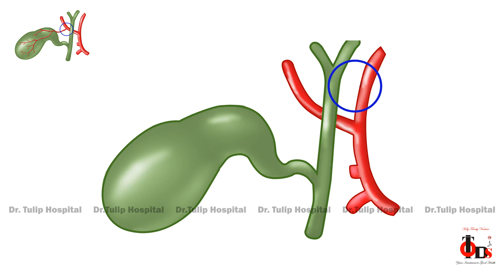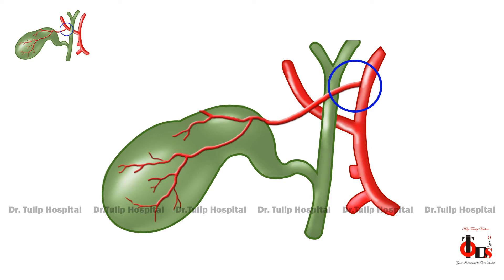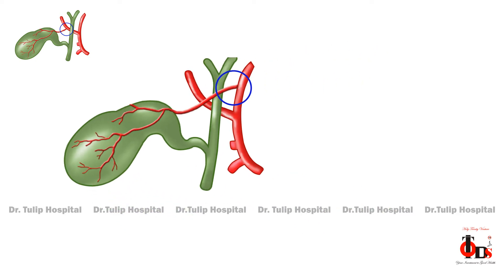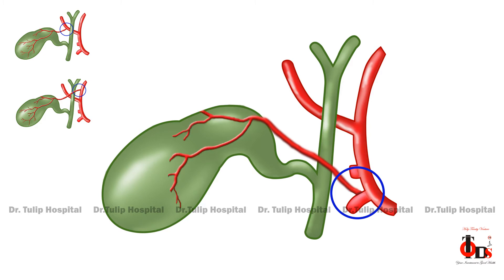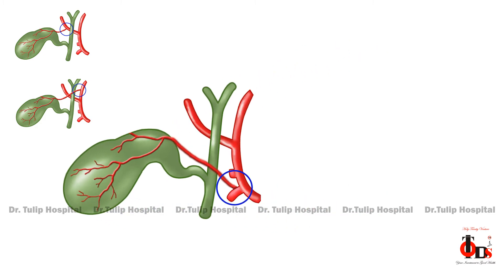It can arise from the left hepatic artery, cross the common bile duct and reach out to the gallbladder. It can also arise from the gastroduodenal artery and branch out into anterior and posterior branches.